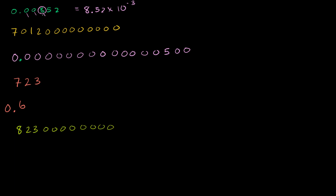Another way to think of it: this is like 8 and a half thousandths — each of these is thousandths and we have 8 and a half of them.